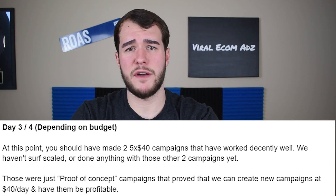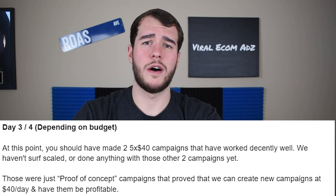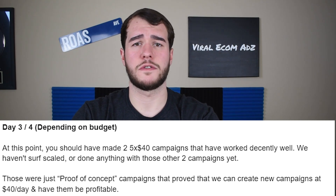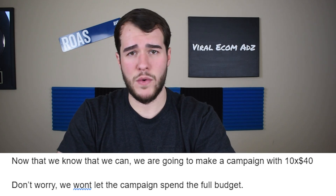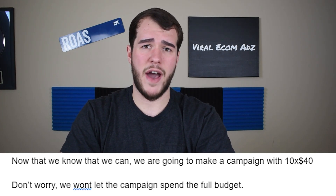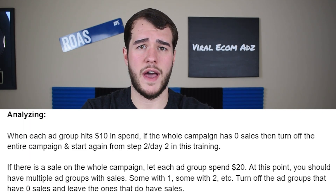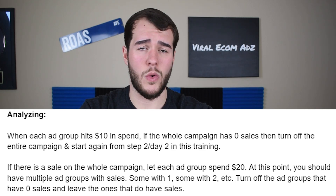At this point you should have made two five by $40 campaigns, both ending up pretty well with a couple of profitable ad groups. This is all the proof of concept we need — we know $40 daily budgets work and creating a new campaign every day also works. So the way we're going to take advantage of that is by doing a ten by $40 on our next campaign: instead of five ad groups at $40 a day each, we're going to do ten ad groups at $40 a day each. We're still not going to let it run the full day — let it go up to $20 per ad group, then follow the same exact rules.